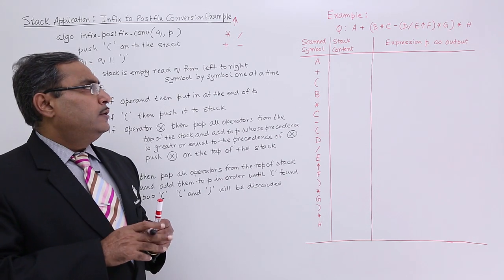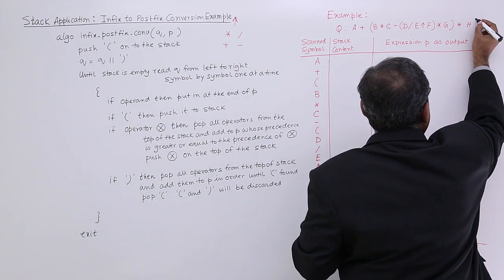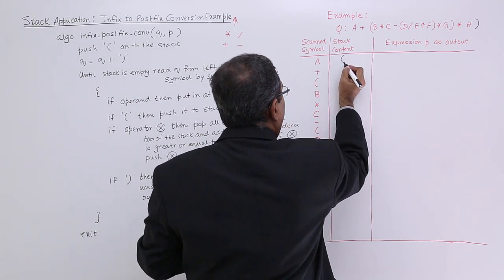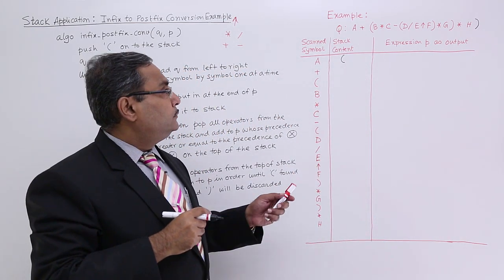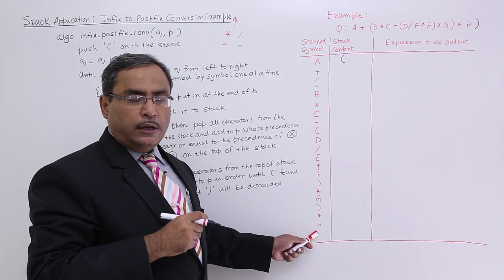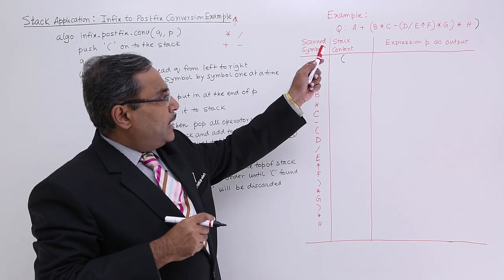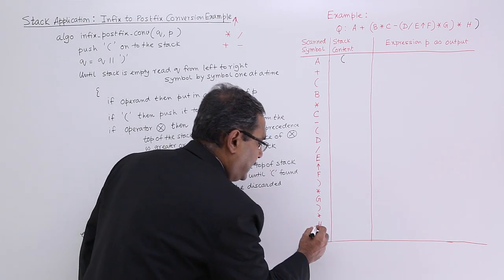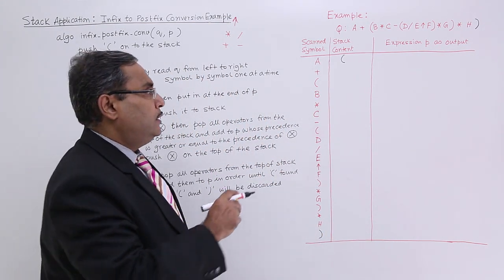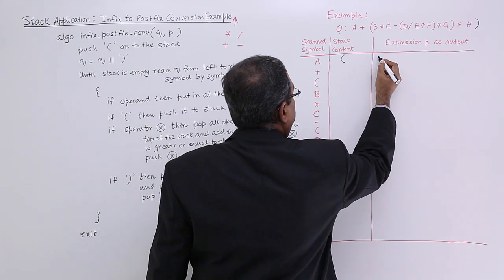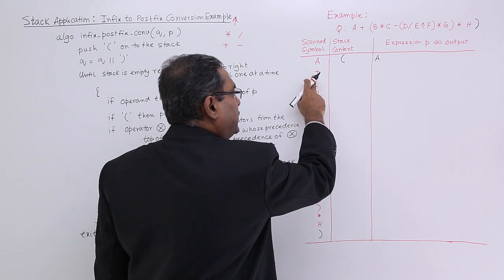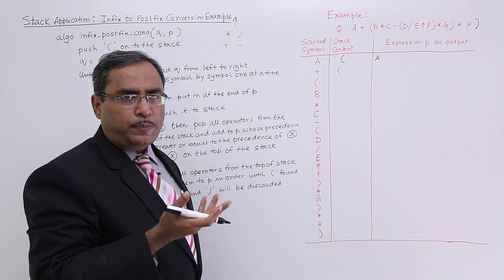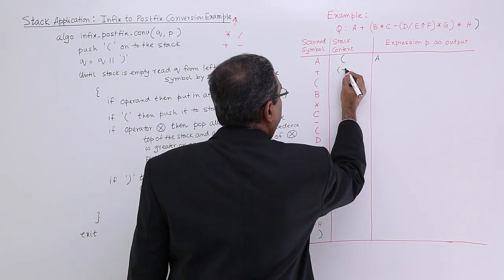Suppose we are given one infix expression and we want to produce postfix expression P. One closing bracket is concatenated at the end of Q and one opening bracket is placed on the top of the stack. Scanning begins: A is an operand so it is put in P. The plus operator is encountered — there is no operator on the top of the stack, so the currently scanned operator plus is pushed onto the top of the stack.